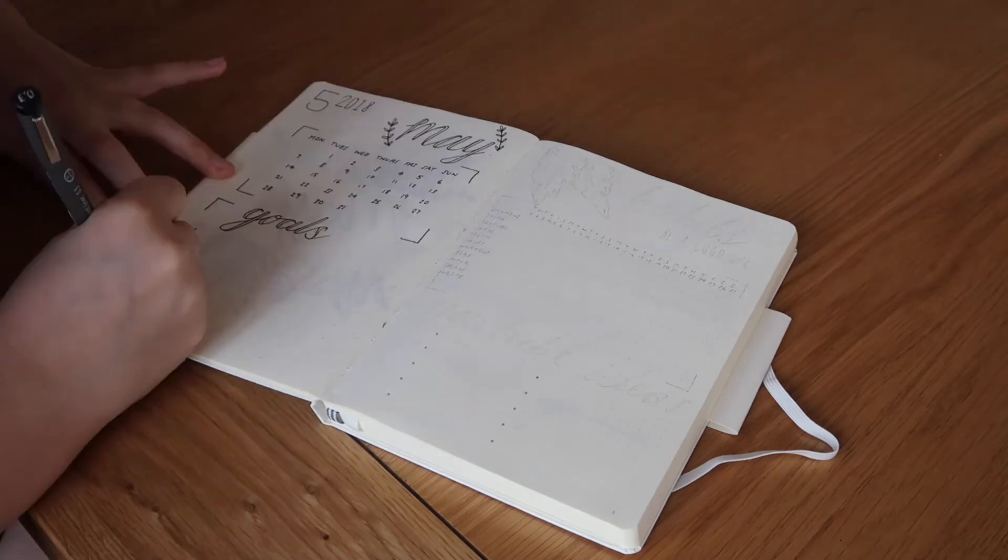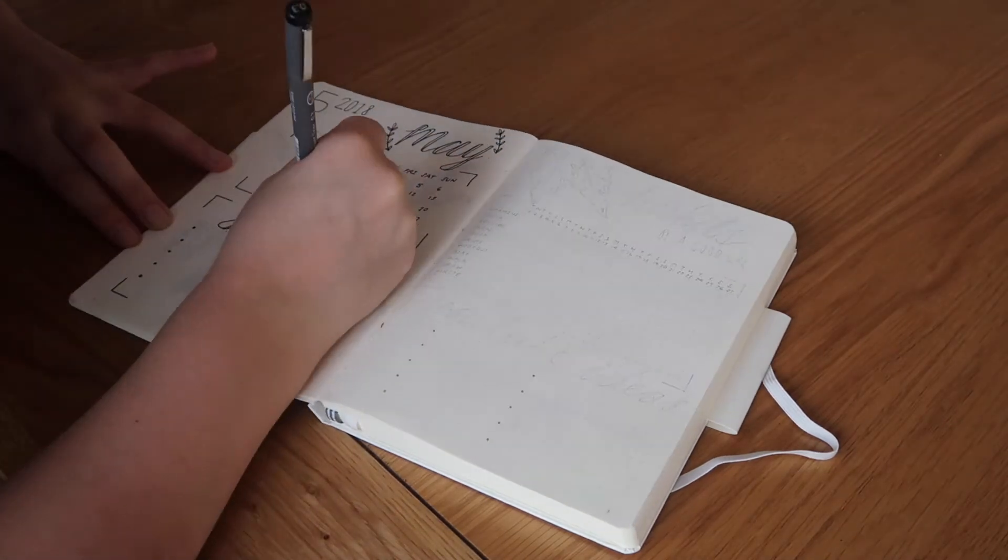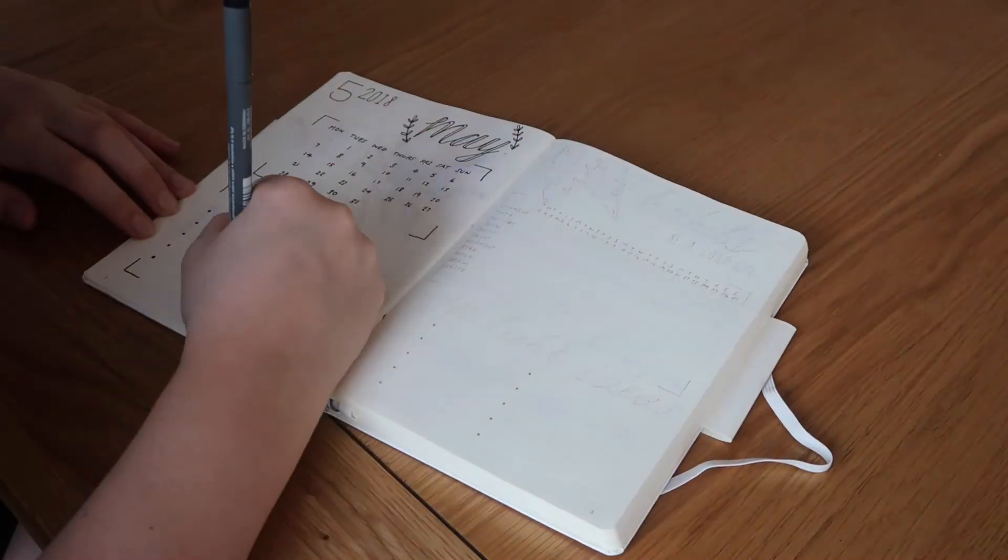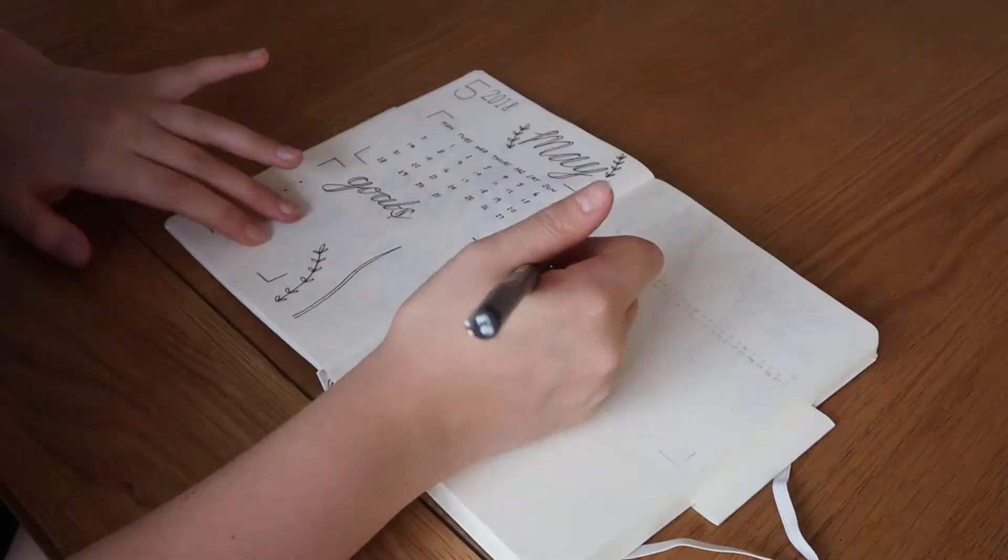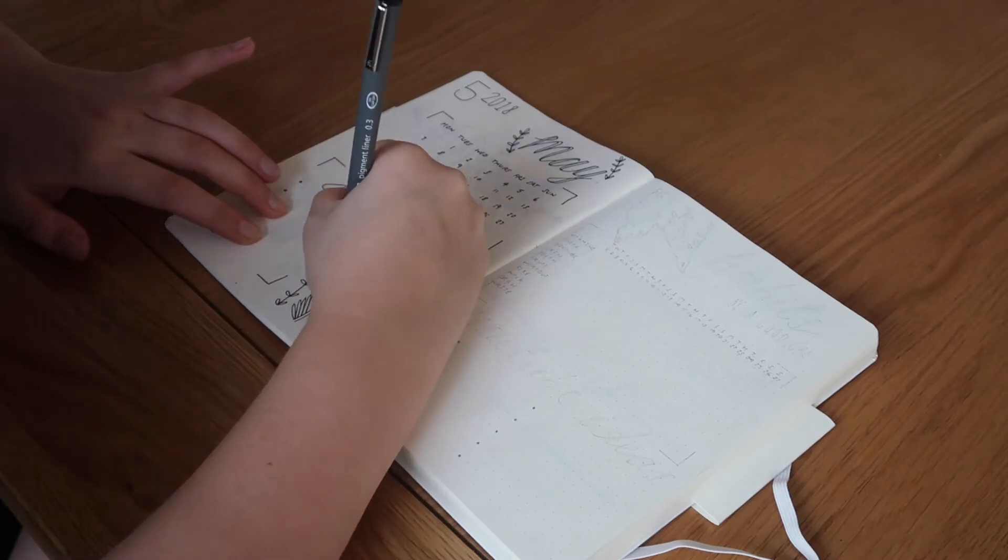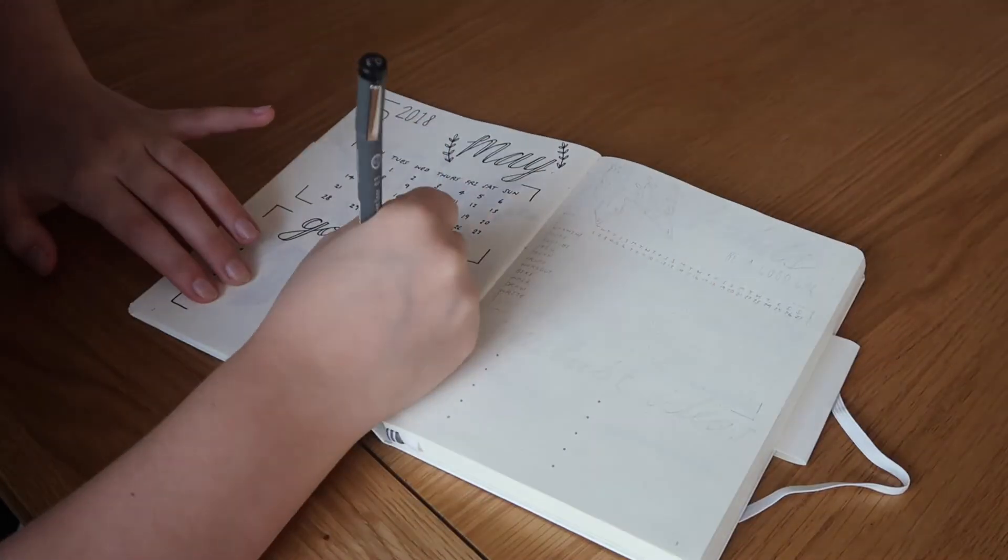I've not done too many pages because I didn't want to over complicate it because at the minute obviously I don't know how much I'm going to write down. But then I just did a goals section so I can write down what goals I've got for that month.